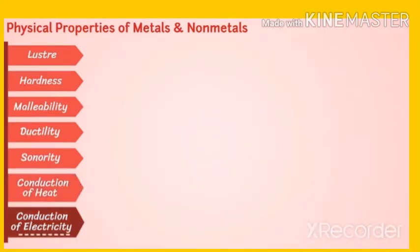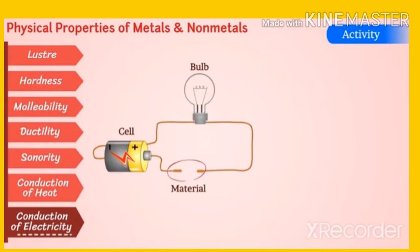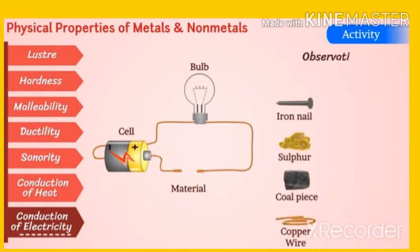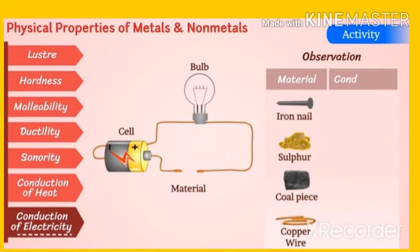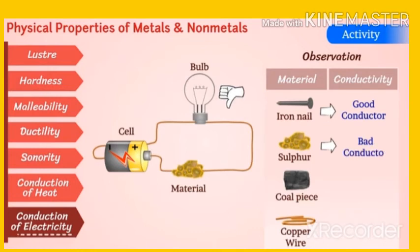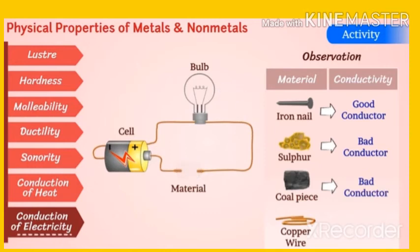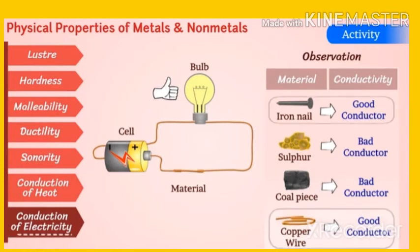Conduction of electricity: Connect a circuit and check if the bulb lights up for different materials. Observations: Iron nail is a good conductor. Sulphur is a bad conductor. Coal piece is a bad conductor. Copper wire is a good conductor. From this activity, you can verify that metals are good conductors of electricity, but non-metals are bad conductors of electricity.